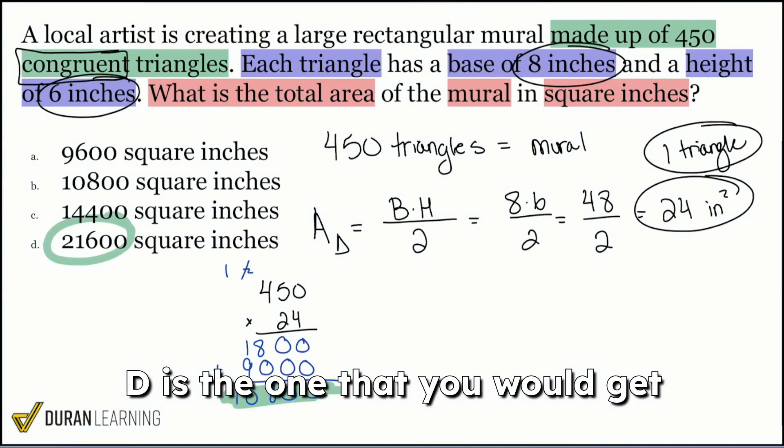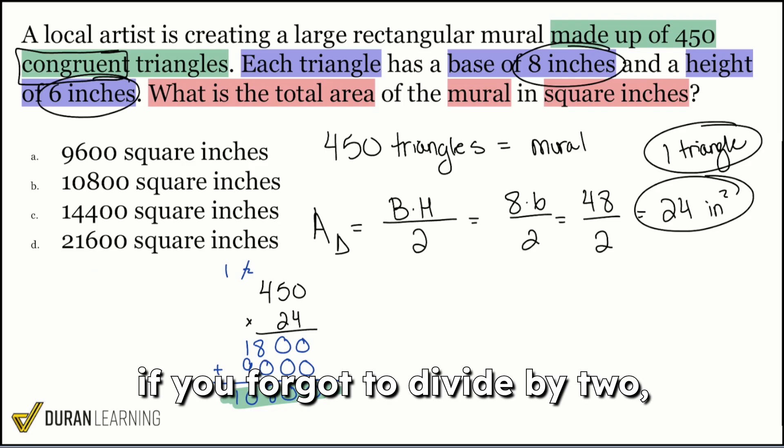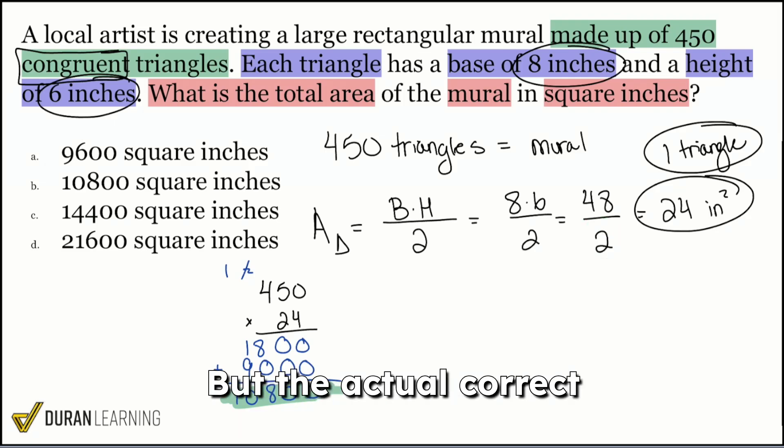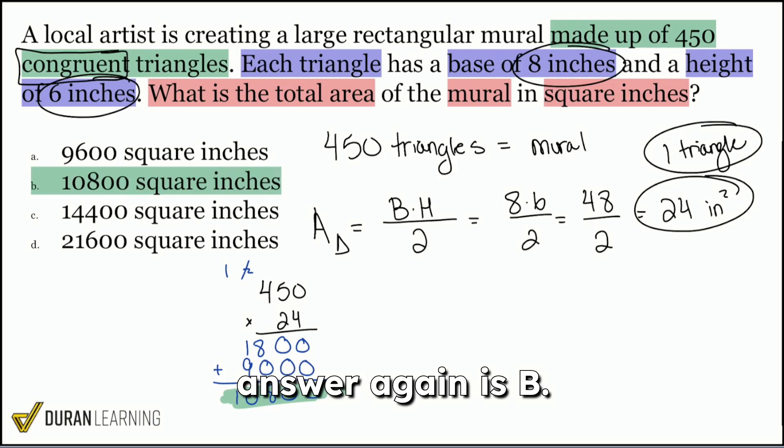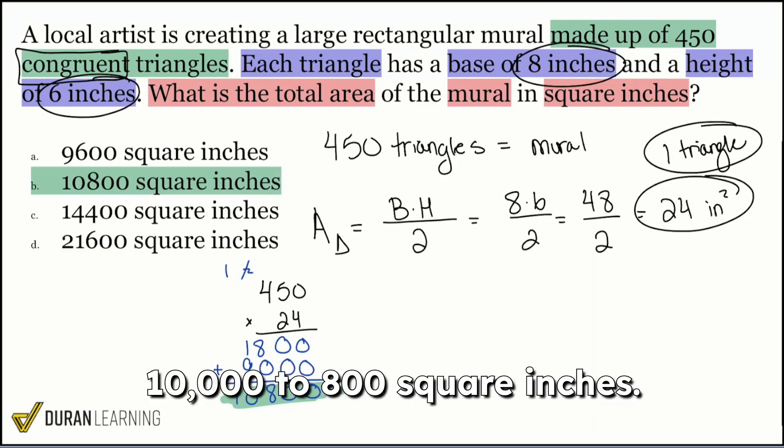So the correct answer will be 10,800 square inches. Not D. D is the one that you would get if you forgot to divide by 2 right over here. But the actual correct answer, again, is B, 10,800 square inches.